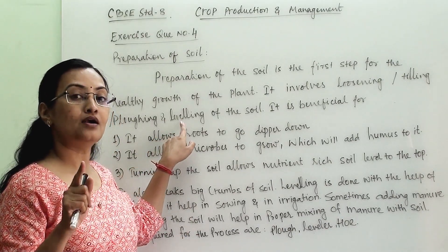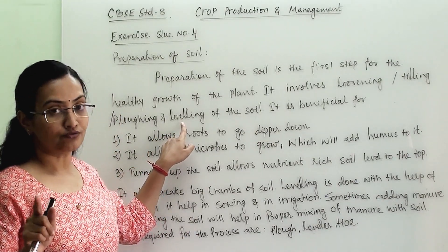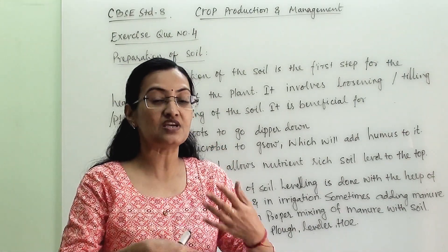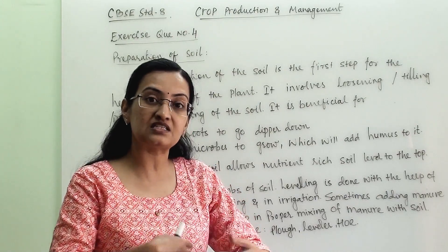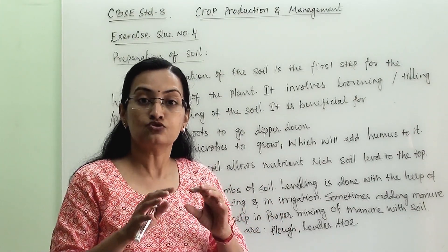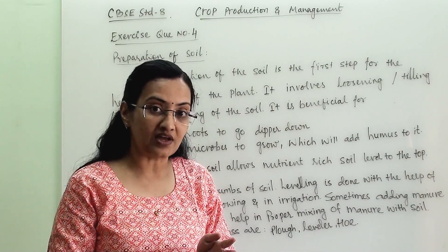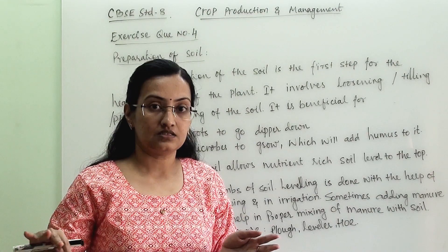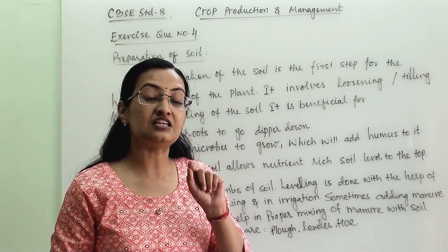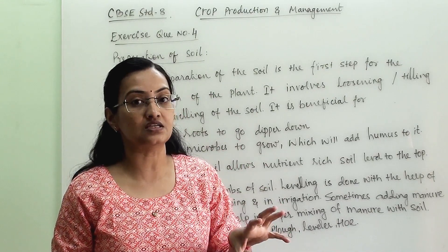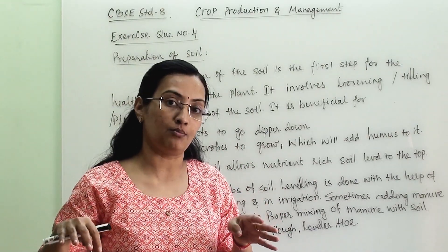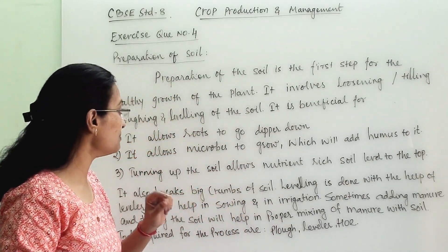Leveling is also a part of the preparation of the soil. After tilling and mixing the soil, big crumbs of soil may remain, so we break them and level the uneven soil. This is helpful for irrigation — to provide water — and for sowing seeds properly. If the soil is at an uneven level, sowing will not be done properly.